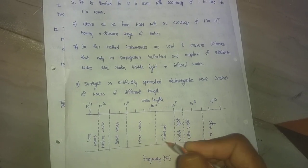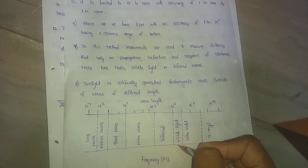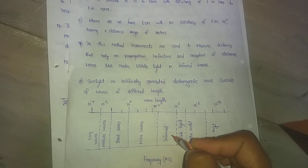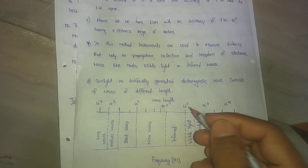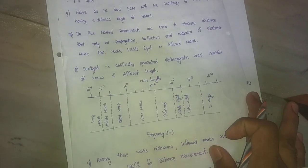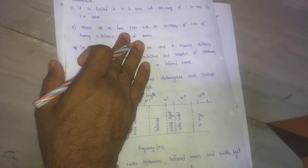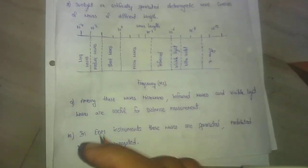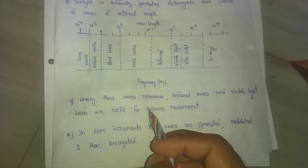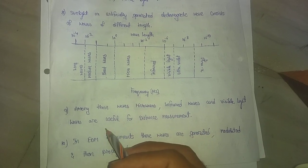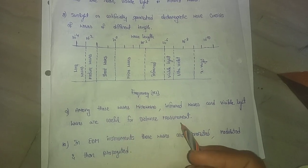Types of waves include microwaves, infrared waves, visible light, ultraviolet rays and X-rays. These are the different wavelengths, and their unit is frequency. Among these waves, microwaves, infrared waves and visible light are useful for distance measurement.